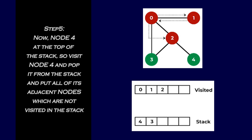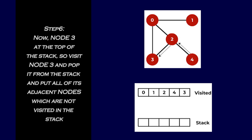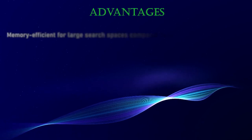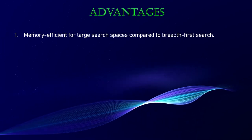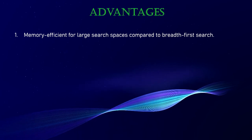Step five: node four is now at the top of the stack — visit node four and pop it from the stack, putting all its unvisited adjacent nodes into the stack. Step six: node three is now at the top of the stack — visit node three and pop it from the stack. Now the stack becomes empty, which means we have visited all the nodes and our DFS traversal ends.